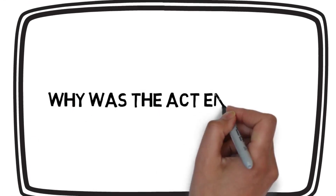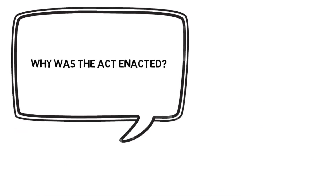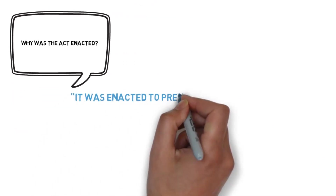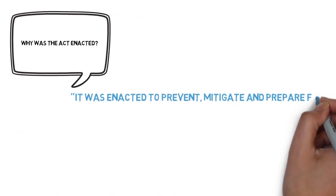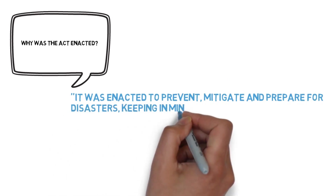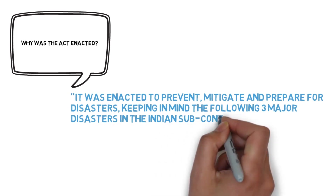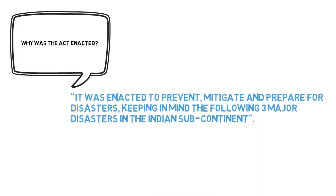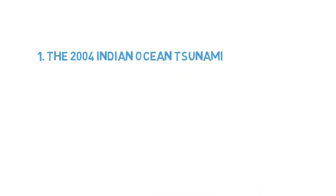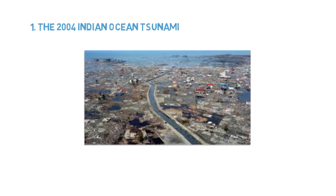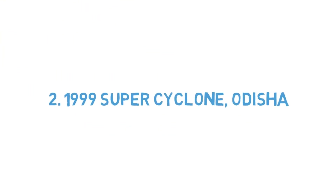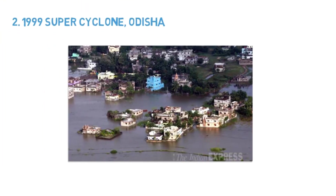You must be thinking about why this act was enacted and why it came into effect. Basically, this act was enacted to prevent, mitigate and prepare for disasters, keeping in mind the following three major disasters in the Indian subcontinent: firstly, the 2004 Indian Ocean Tsunami; second, the 1999 Super Cyclone in Odisha; third, the 2001 Bhuj earthquake.